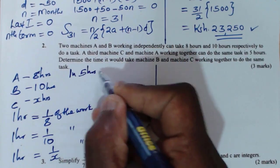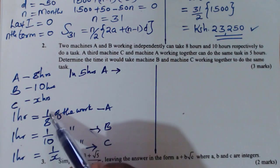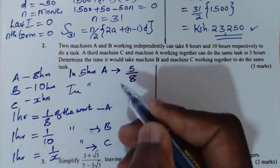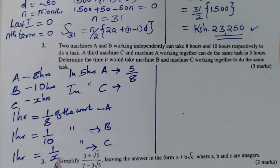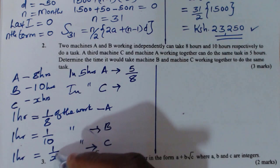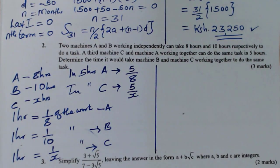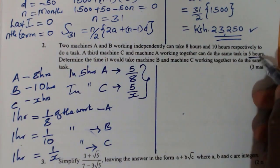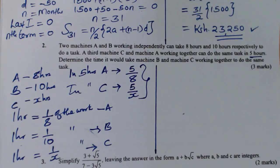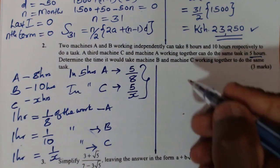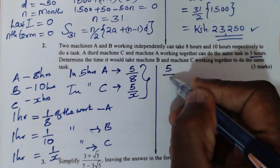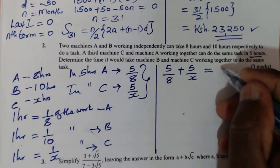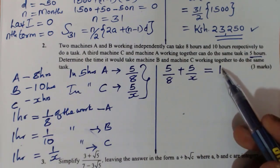In five hours, A will do one over eight times five, which is five over eight of the work. In five hours, C — remember in one hour C does one over X — so in five hours C will do five over X. Both A and C can complete the work in five hours, so when the work is complete it equals one whole. Therefore: five over eight plus five over X equals one.